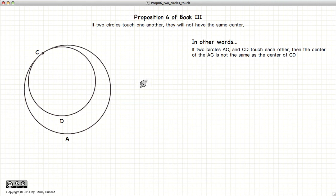which states that if you have two circles touching each other at the point C, they do not have the same centers.